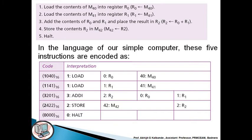In the language of our simple computer, these five instructions are encoded as follows. First, all these codes are of 16 bits, that is hexadecimal code. Code one for the first one: 1040, LOAD R0, M40. 1141, LOAD R1, M41.